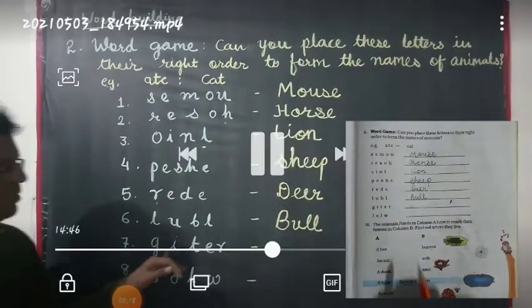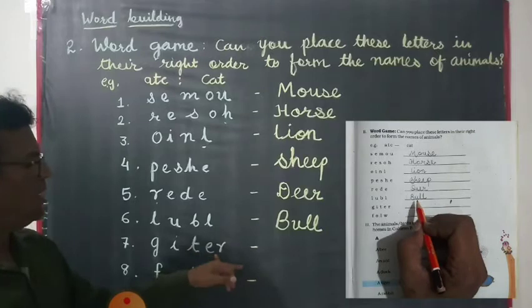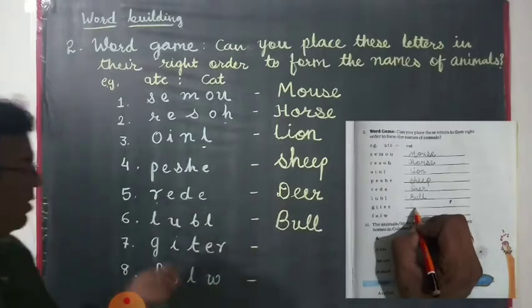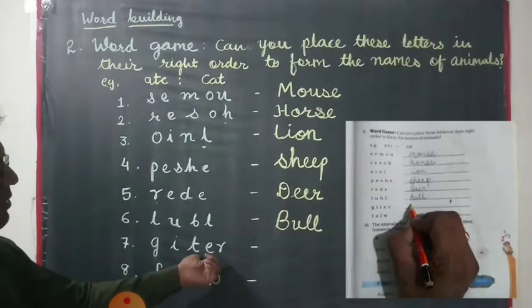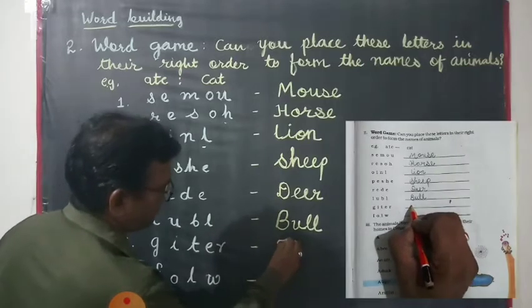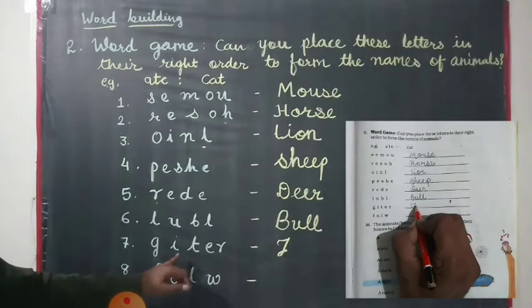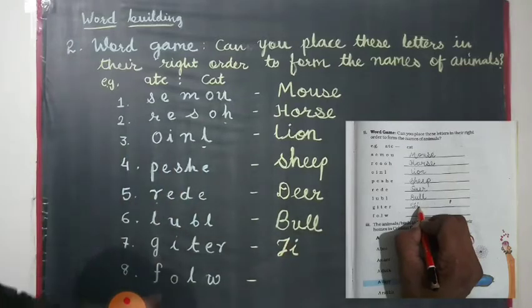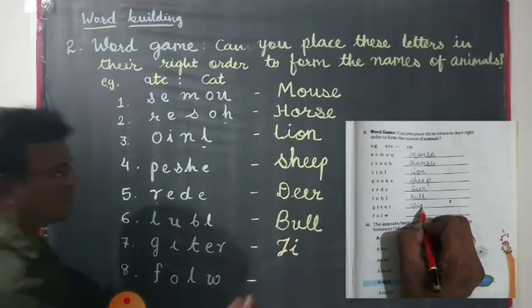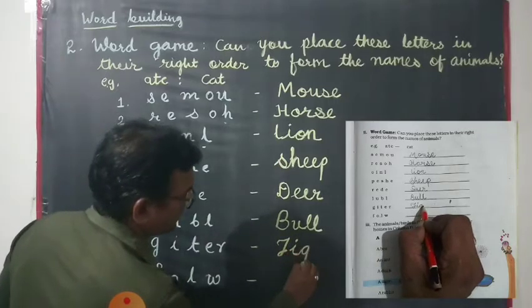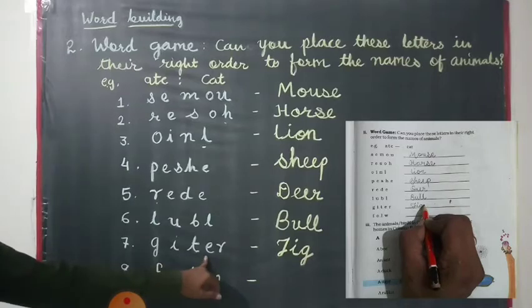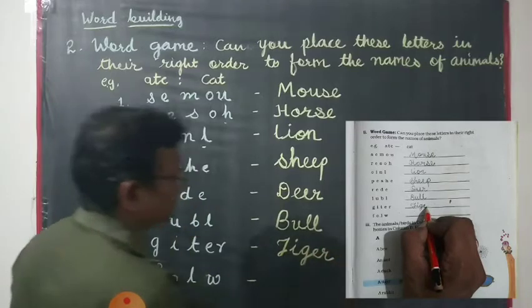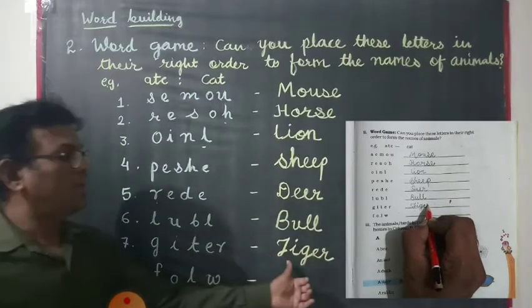Now seven: G, I, D, D, R — find out, my dear, the name of the animal. We put T, I, G, E, R. Yes, this is the spelling of tiger.